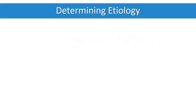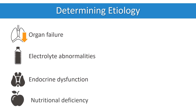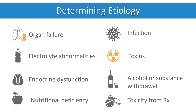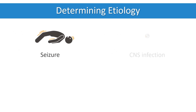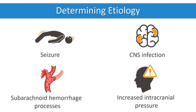Encephalopathy may be due to organ failure, electrolyte abnormalities, endocrine dysfunction, nutritional deficiency, infection, toxins, substance withdrawal, or toxicity from medications. Primary central neurological causes include seizures, CNS infections, subarachnoid hemorrhage, cerebrovascular processes, and any of the multiple causes of increased intracranial pressure, among others.